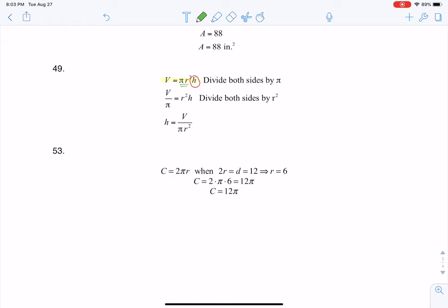And you can go in either order. You can divide by the pi first and then the R squared, or you could divide by the R squared first and then the pi. It doesn't really matter. You also could opt to do both of them at the same time. And I'll do that.